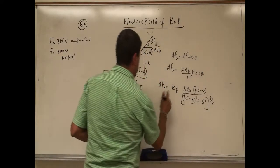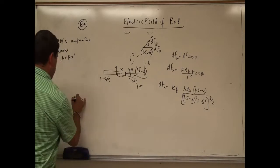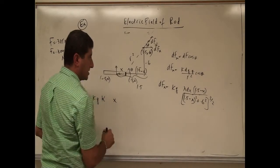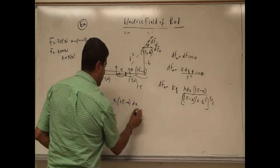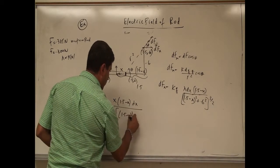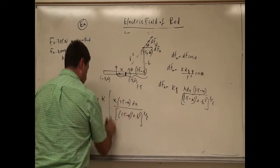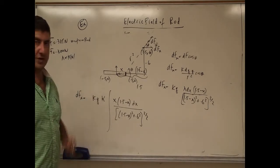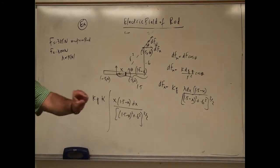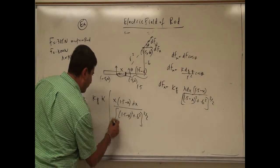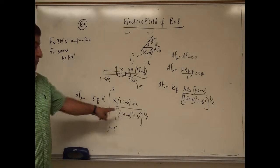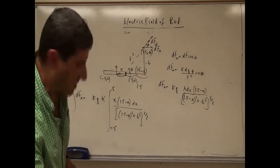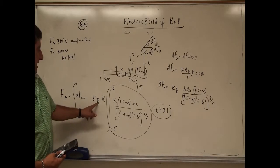The other difference is that lambda is now kappa times x. So dfx equals k times q times kappa times x times (1.5 minus x) dx over (1.5 minus x) squared plus 0.6 squared to the 3/2 power. The constants k, q, and kappa can be pulled out of the integral. We integrate from negative 0.5 to 0.5 to get the force in the x direction.